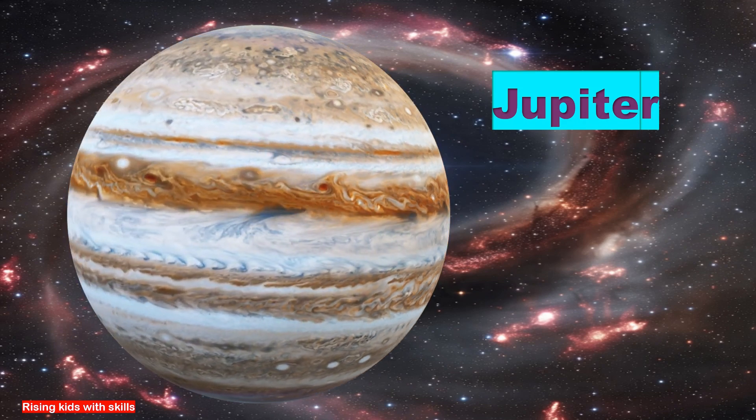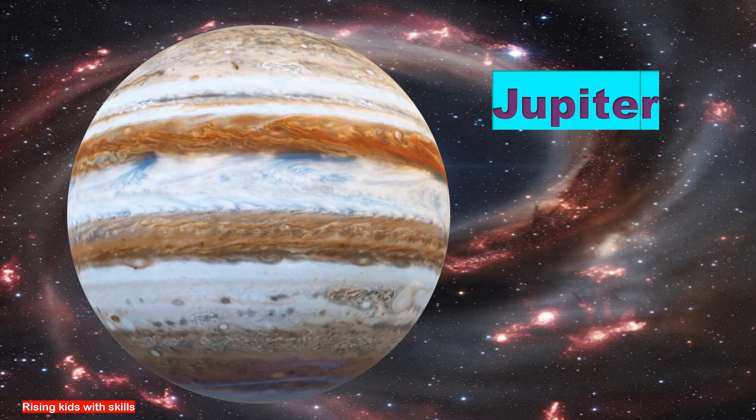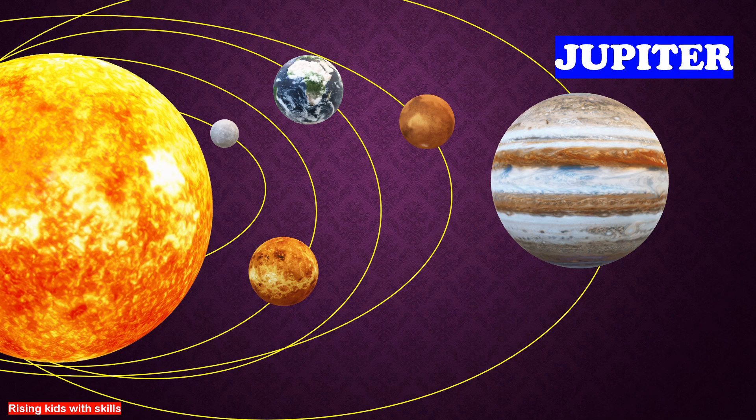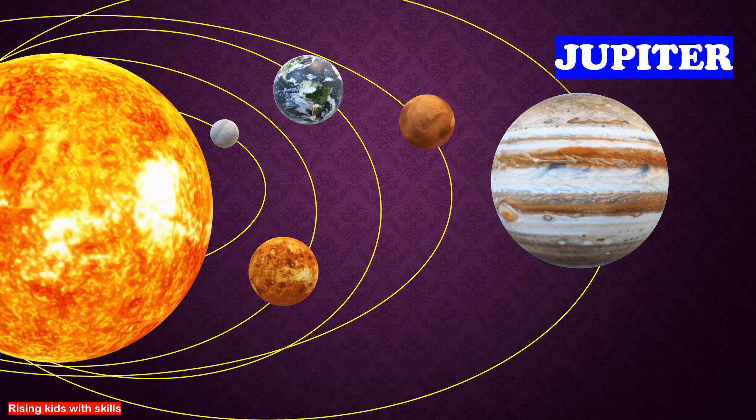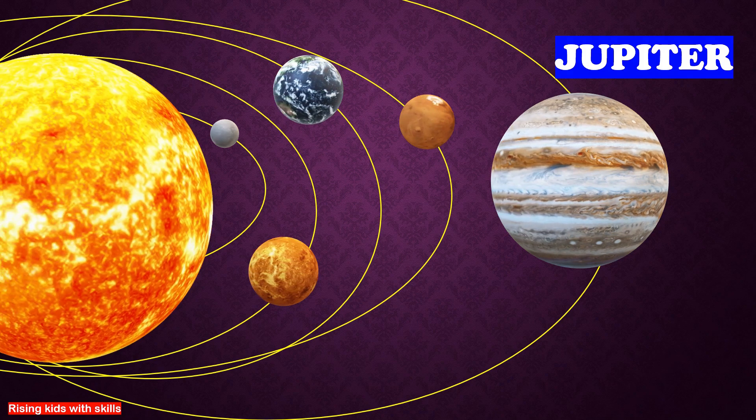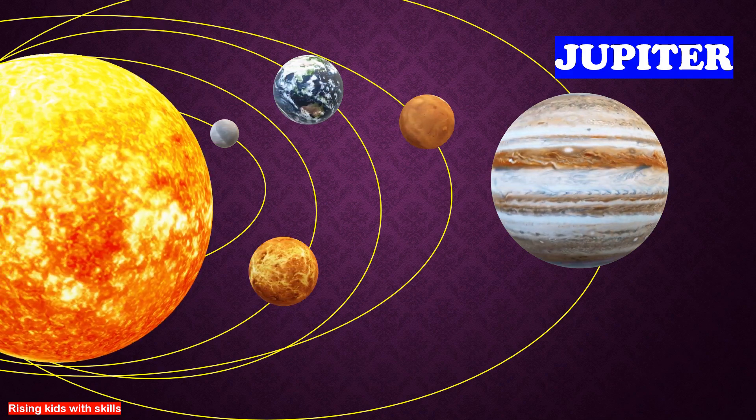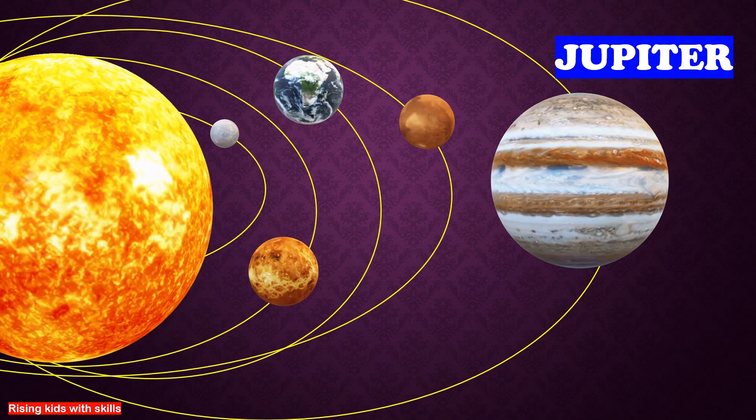This is Jupiter, the fifth planet from the Sun and the largest planet in our solar system with a huge storm called the Great Red Spot. Jupiter is known for its massive size, strong magnetic field, and its Great Red Spot. This planet has at least 79 moons, including the Galilean moons and Europa.